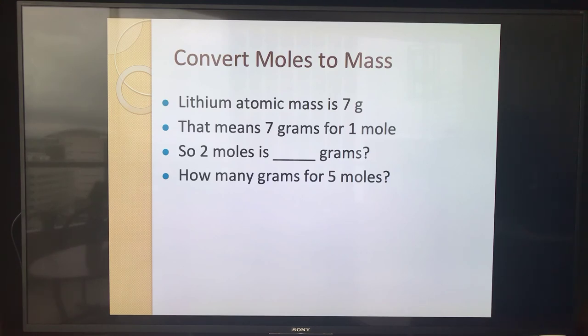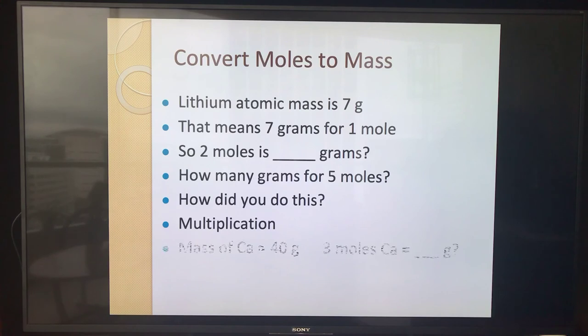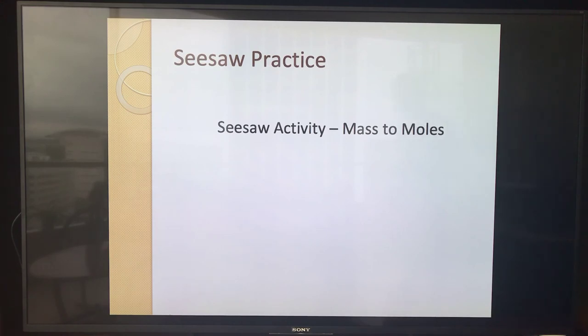How many grams would 5 moles be? Let's see, 2 moles was 14, 3 times 7 is 21, 4 times 7, so 5 times 7. How about 35 grams? 5 times 7. So how did we do that? We're multiplying. Just the opposite of what we did before. So in this case, if calcium again has a mass of 40 grams per mole, if I have 3 moles, then I multiply 3 times 40 and I get 120 grams.